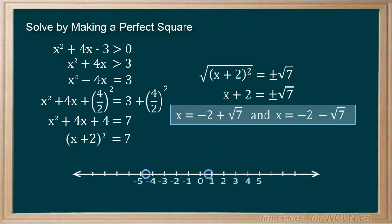And we get x is equal to negative 2 plus root 7 and negative 2 minus root 7. These are our zero points on the number line. We can test as before to see which intervals make the inequality true. The solution is shown here.